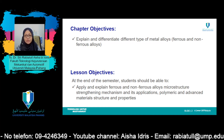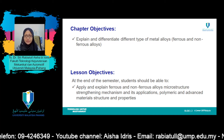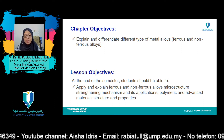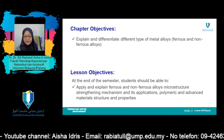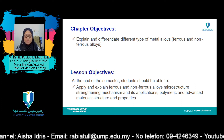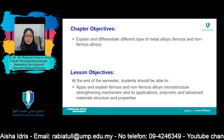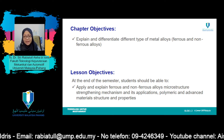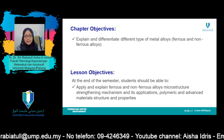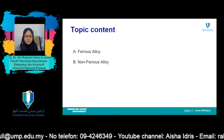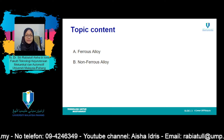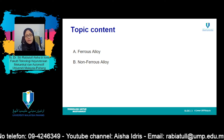For the chapter objectives, students should be able to explain and differentiate different types of metal alloys, which are ferrous and non-ferrous alloys. Meanwhile, for lesson objectives, at the end of the semester students should be able to apply and explain ferrous and non-ferrous alloys, microstructure strengthening mechanisms and applications, polymeric and advanced material structures as well as their properties. Today we are going to look at two topics: ferrous alloy and non-ferrous alloy.